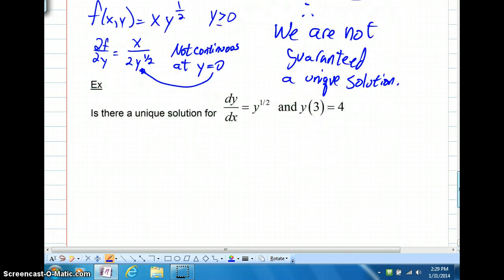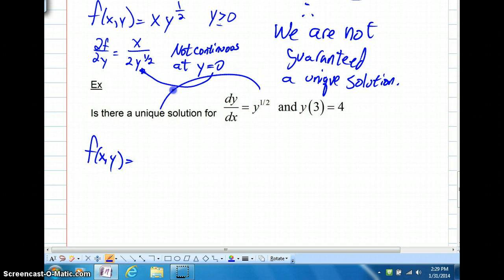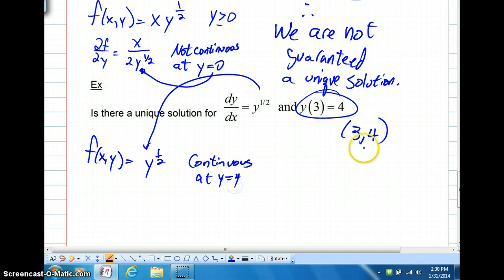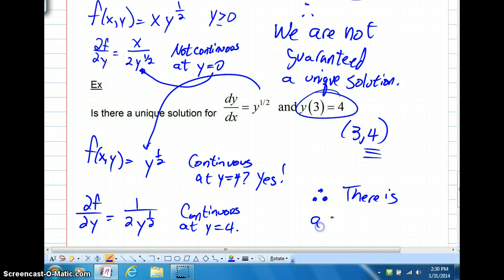But let's take a look at this next one. f of x, y, the right-hand side is y to the one-half. And here we have three comma four. So are we continuous at y equals four? That's maybe the big question. What do you think? f of x, y, the right-hand side? Okay, let's take a partial derivative of f with respect to y. What do we get now? 1 over 2y to the one-half. Are we continuous at y equals four? Yeah. What do we know? Therefore, there is a unique solution to this problem.